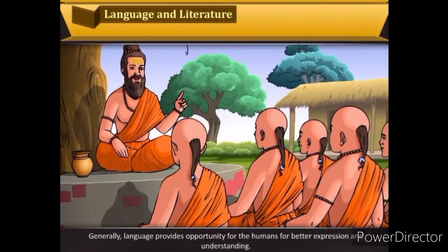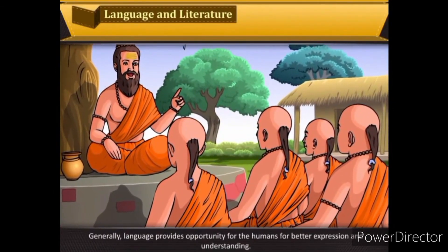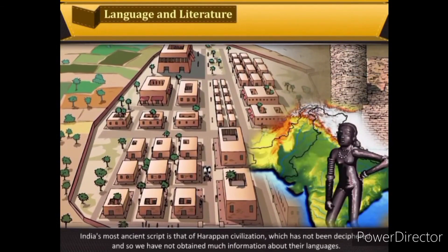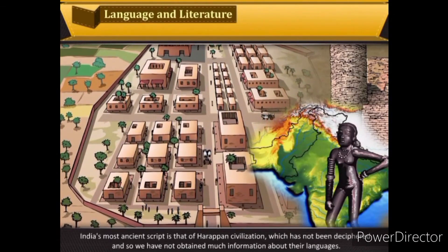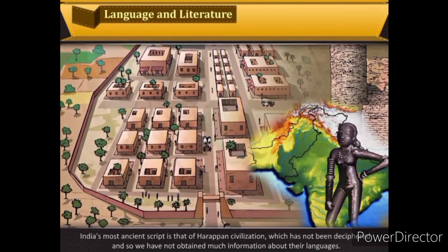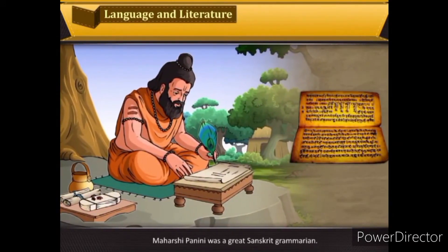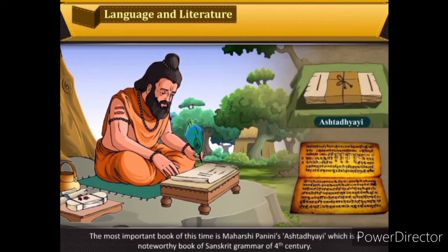Generally, language provides opportunity for humans for better expression and understanding. India's most ancient script is that of the Harappan civilization, which has not been deciphered, and so we have not obtained much information about their languages. Maharishi Panini was a great Sanskrit grammarian. The most important book of this time is Maharishi Panini's Ashtadhyayi, a noteworthy book of Sanskrit grammar of the fourth century.